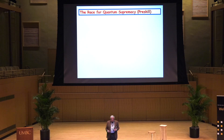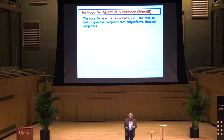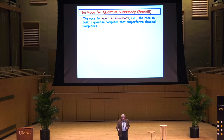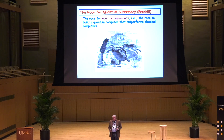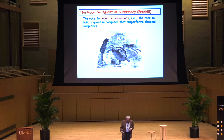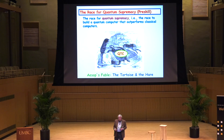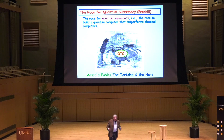The race for quantum supremacy — a phrase coined by Jim Preskill, now Professor Emeritus from Caltech — is essentially a race to build a quantum computer that outperforms classical computers. IBM has mentioned they intend to win this race. This reminds me of Aesop's fable of the Tortoise and the Hare: it's entirely possible that one of the slowest technologies, topological quantum computing, may be the winner, because there is a natural obstruction to decoherence and less need to dedicate many qubits to quantum error correction.